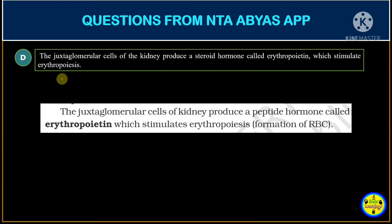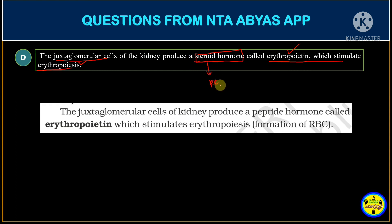Option D says that the juxtaglomerular cells of the kidney produce a steroid hormone called erythropoietin, which stimulates erythropoiesis. It's true that erythropoietin stimulates erythropoiesis and is produced by juxtaglomerular cells. However, erythropoietin is not a steroid hormone — it is a peptide hormone. Your textbook also confirms that juxtaglomerular cells produce a peptide hormone called erythropoietin. So this statement is also wrong.